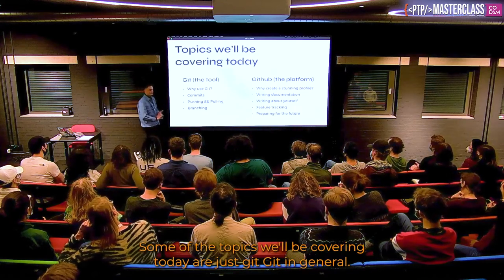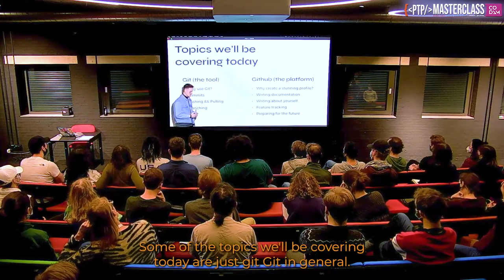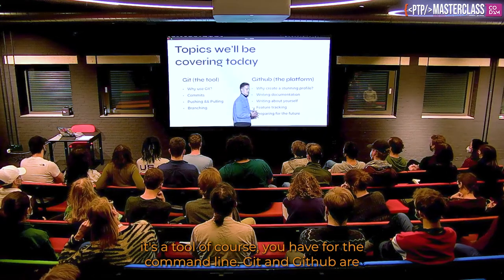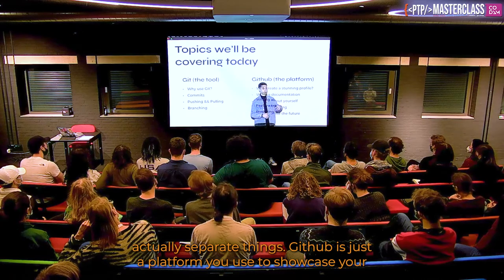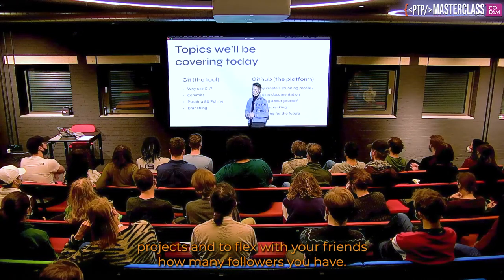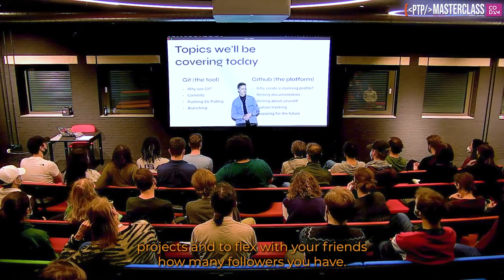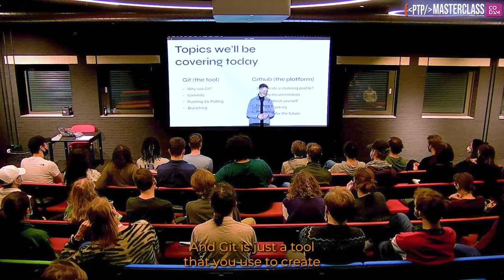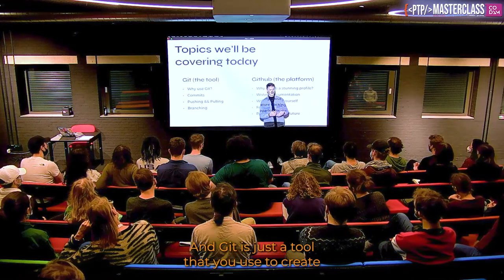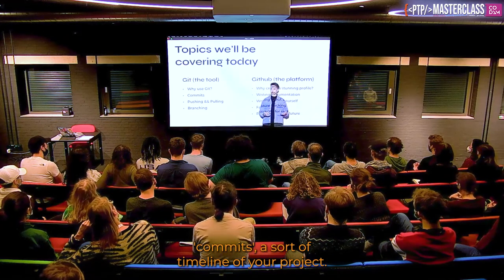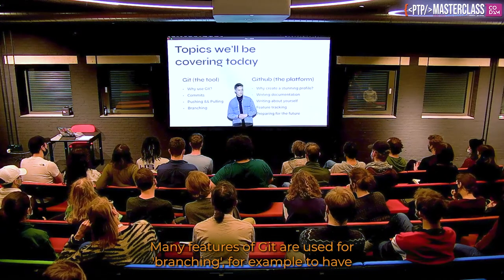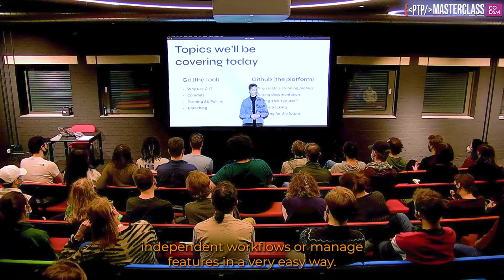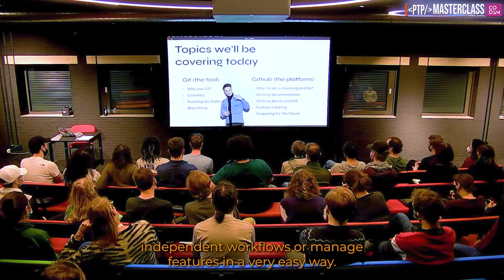Some of the topics we'll be covering today are Git as a general tool you have on the command line. Git and GitHub are actually separate things. GitHub is just a platform you use to showcase your projects, while Git is a tool you use to create commits and a sort of timeline of your project. Many features of Git are useful — branching, for example, to have independent workflows or manage features in an easy way.